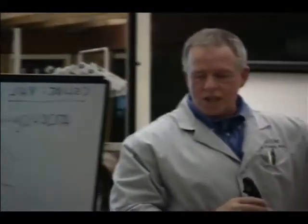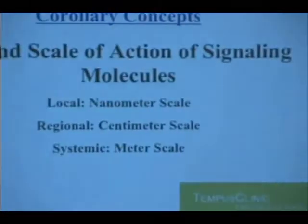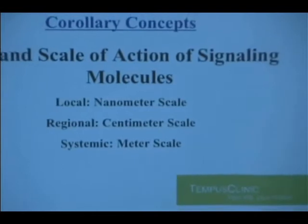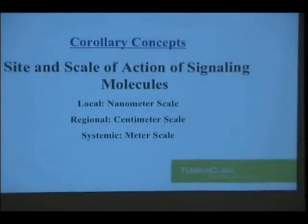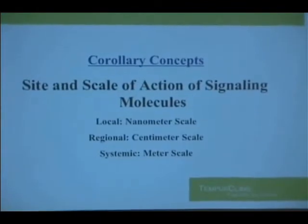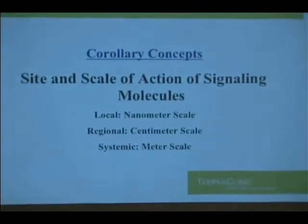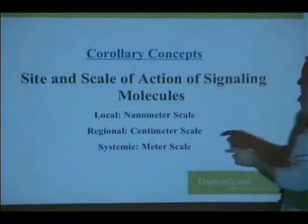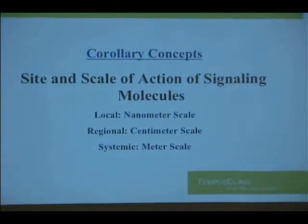You have to understand the site and scale of action of the signaling molecules. Your body is full of little signaling molecules — little atoms, chains of atoms — that tell one part of the body something about another part. The scale and site of action happens on three different scales. The first is local: the nanometer scale, 10 to the minus 10th meters — that's really tiny.